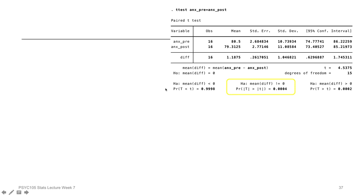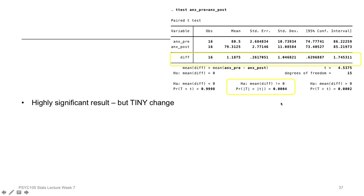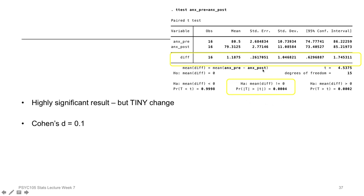Running a paired samples t-test on this data gives a t-statistic of 4.5 and a p-value of 0.0004 — a highly significant result. But the mean anxiety change is only a decrease of 1.1 units. Calculating Cohen's D gives 0.1, meaning the average difference is just 0.1 standard deviations — a negligible decrease. The reason it's statistically significant is because almost everyone's anxiety decreases, so there's very little variation, but the actual change is tiny.